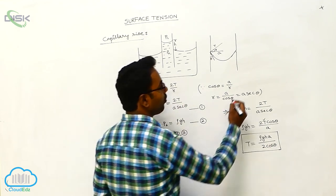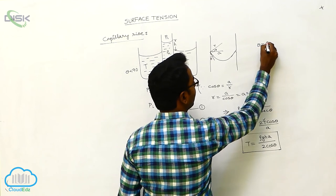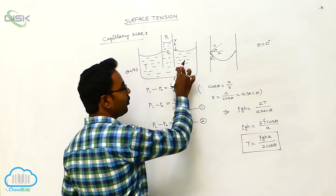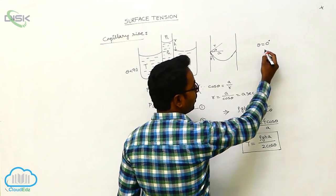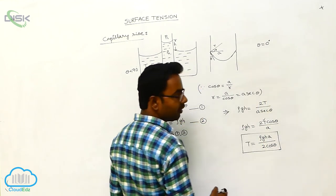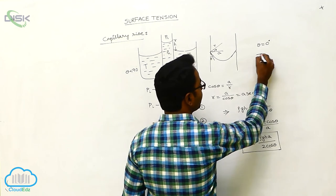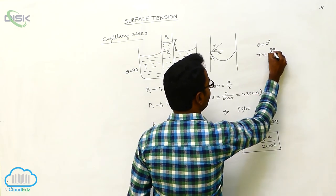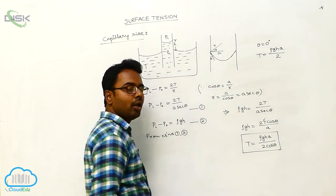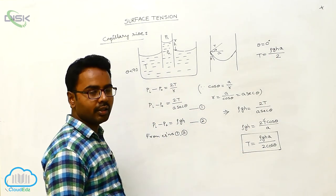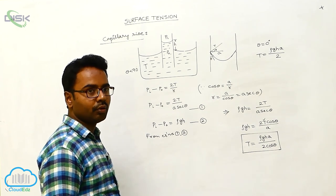Generally, for pure water and clean glass, the angle of contact is 0 degrees. Suppose this liquid is water and it is clean glass. Then, cos theta, cos of 0 degrees, cos 0 is 1. We write T is equal to rho GH A by 2. This is applicable only for pure water and clean glass. In this way, we measure the surface tension of a liquid.